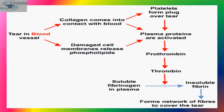First, a tear in the blood vessel occurs — an injury. Then collagen comes into contact with the blood. There is also a bifurcation: damaged cell membranes release phospholipids. These two pathways give rise to activated plasma proteins. Platelets form a plug over the tear, as shown — a thrombus forms over the endothelium lining. The plasma proteins, when activated, form prothrombin.